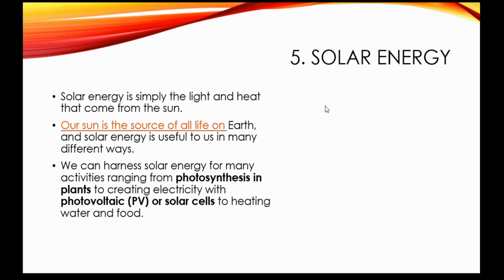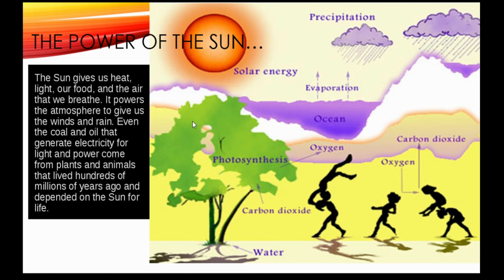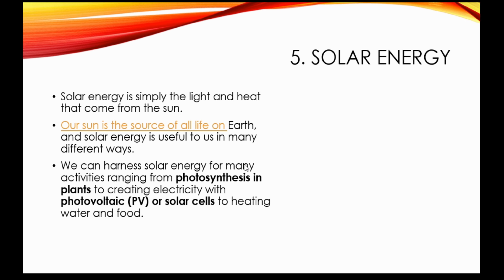The sun is our ultimate source of light and heat energy, so we must consider solar energy itself as a form of energy. The sun is the source of all life on earth — it gives us heat, light, food, and the air we breathe. The sun powers the atmosphere to give us winds and rain. Even coal and oil that generate electricity come from plants and animals that lived millions of years ago and depended on the sun. Practically all sources of energy we use come from solar energy.